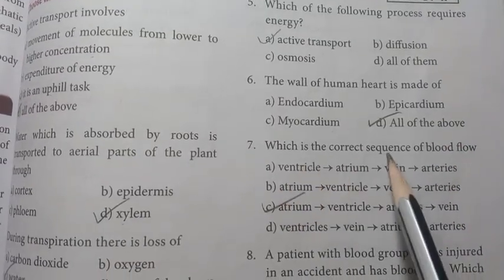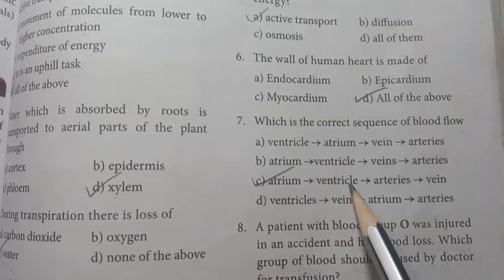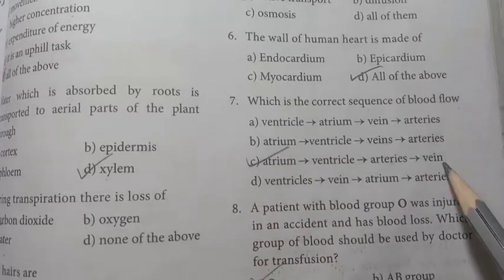Number seven: which is the correct sequence of blood flow? C option: atrium, ventricle, arteries and then veins.